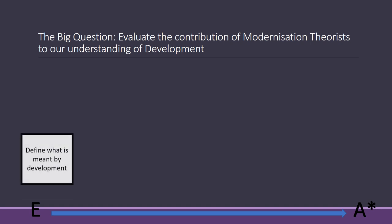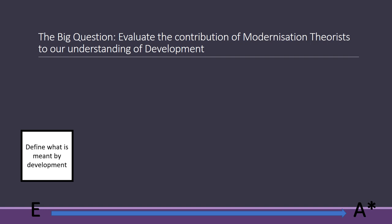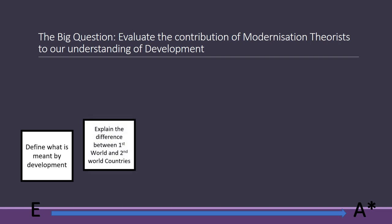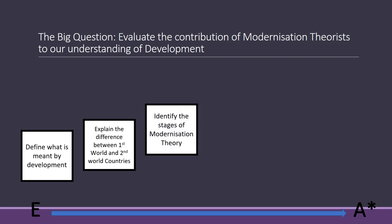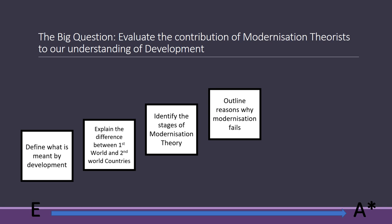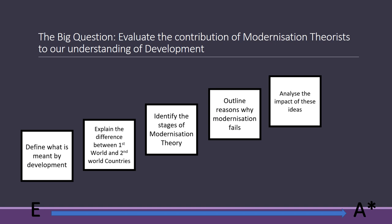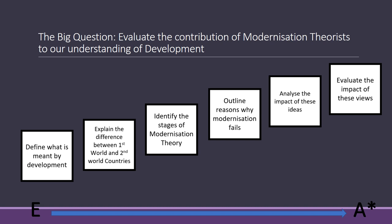In order to answer that type of question, you need to be able to define what is meant by development. You also need to be able to explain the difference between the first world and the second world countries. This is historical context, particularly in line with things like the Cold War. It is important to identify the stages of modernization theory, but you only really need to give a brief description of them. It's more important to understand the process of modernization than the individual stages.